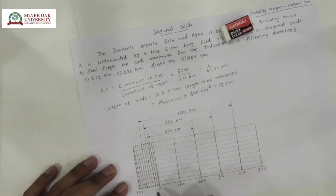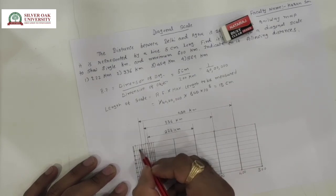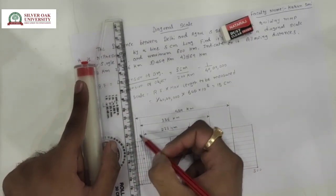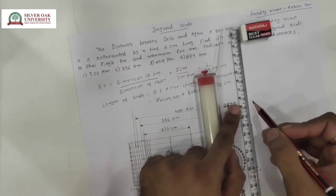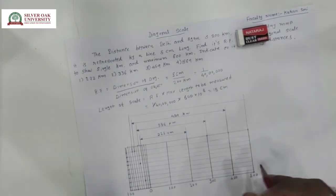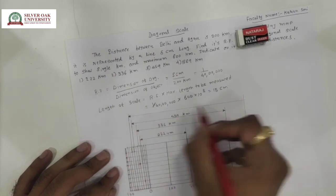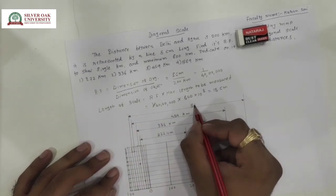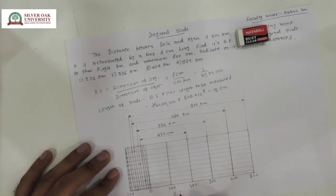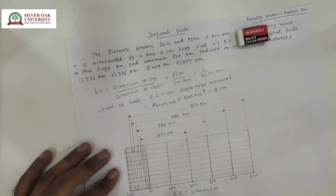The last distance is 569 km. This is 500, then 10, 20, 30, 40, 50, 60, and 9, so this point represents 569 km. This is how we draw the diagonal scale. At the end, we have to also represent the value of the RF, which is equal to 1 divided by 40 lakh. We also have to represent the scale — this is the diagonal scale.